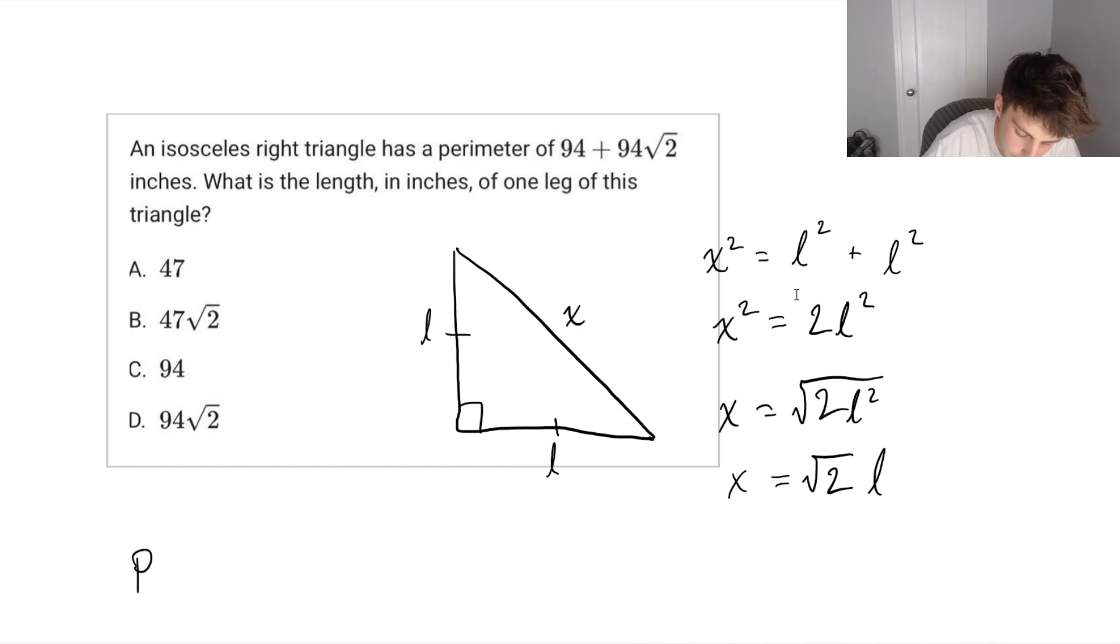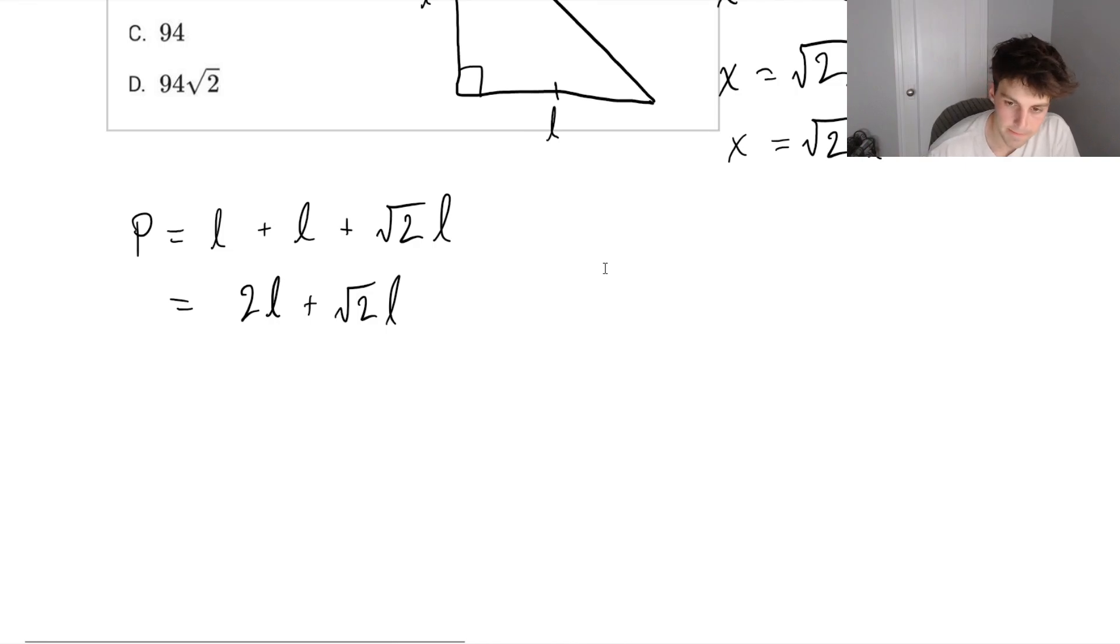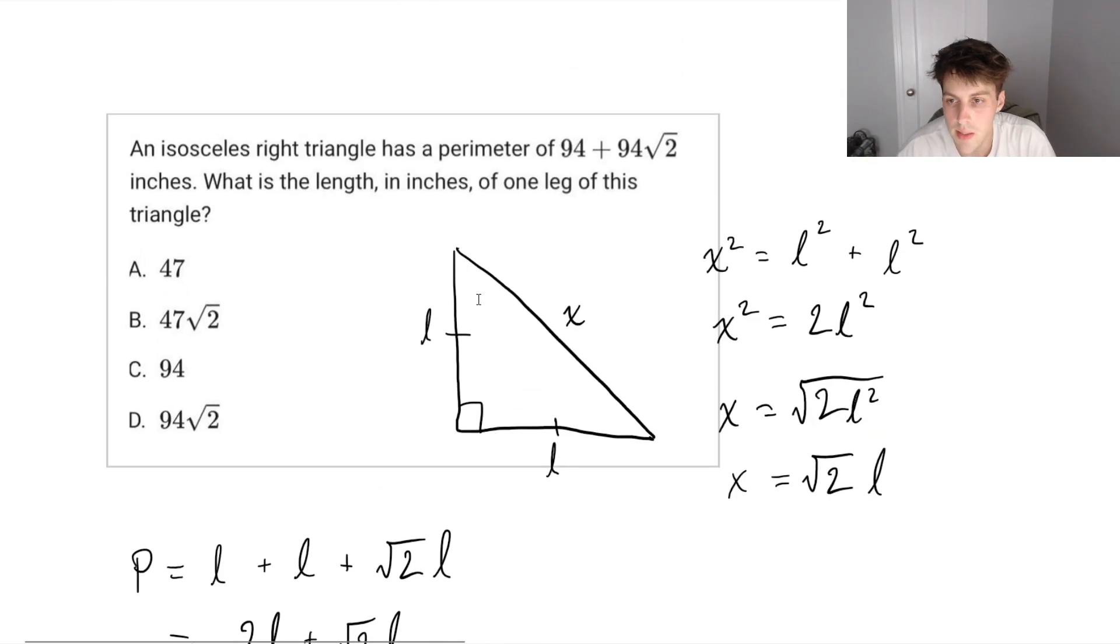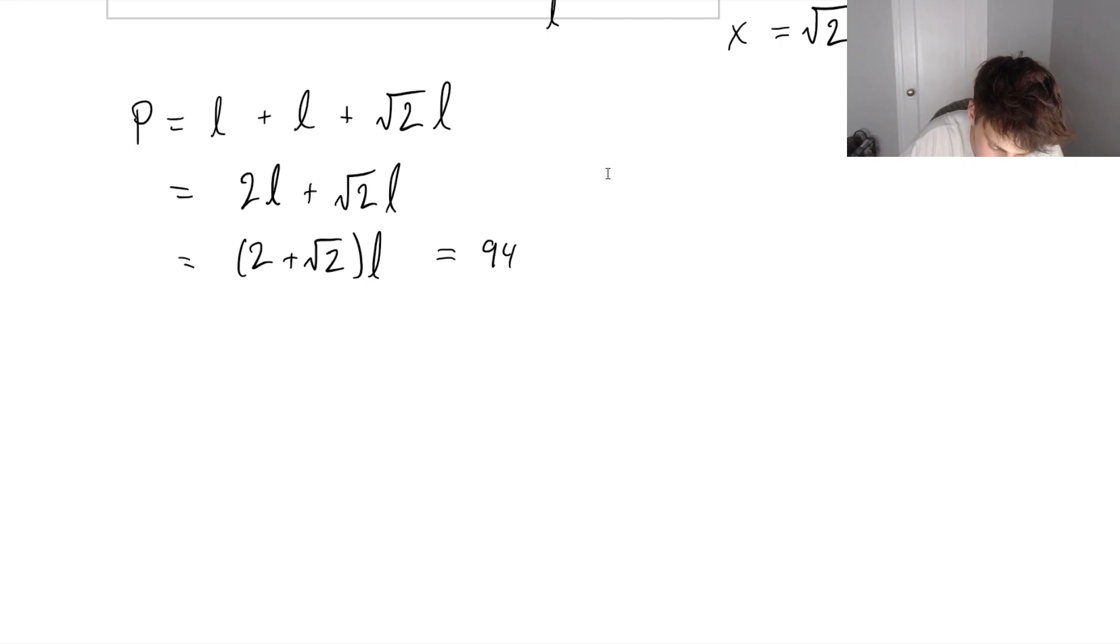We know that the perimeter is going to be length plus length plus square root two times length. So this is going to be two L's plus square root of two times L. We can factor out an L here, and we get two plus square root two times L. And we know that this is going to be equal to, it tells us in the question, 94 plus 94 root two. So now we can just solve for L. What is the length in inches of one of the legs of the triangle? And we have an equation here that's just got one variable.